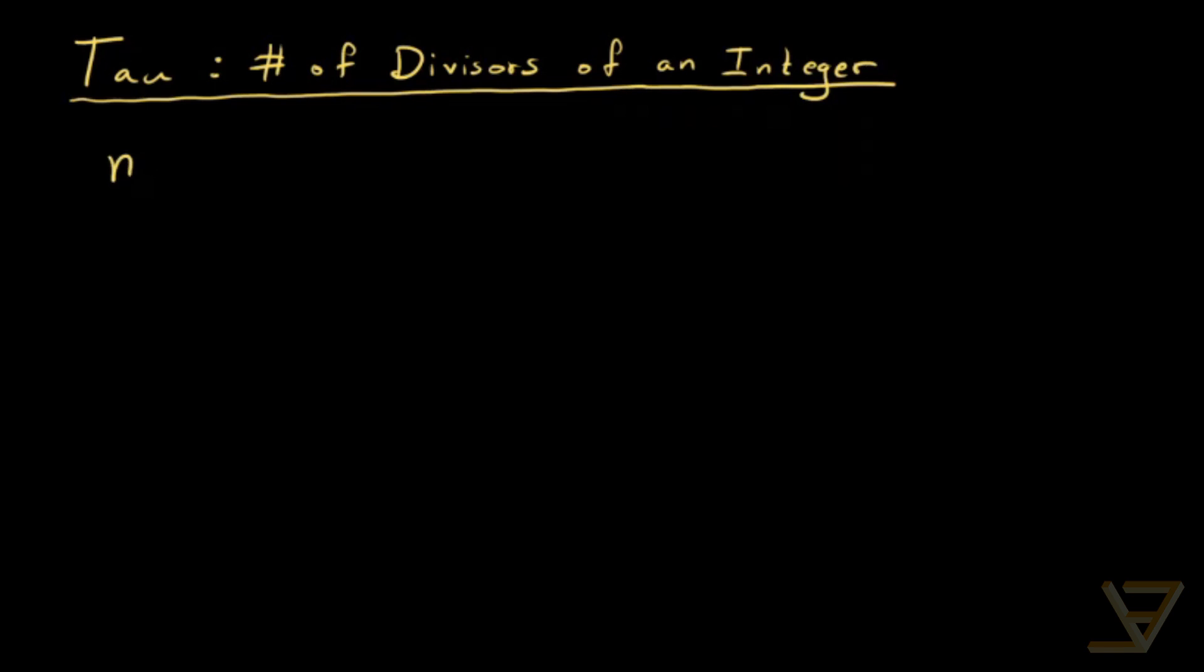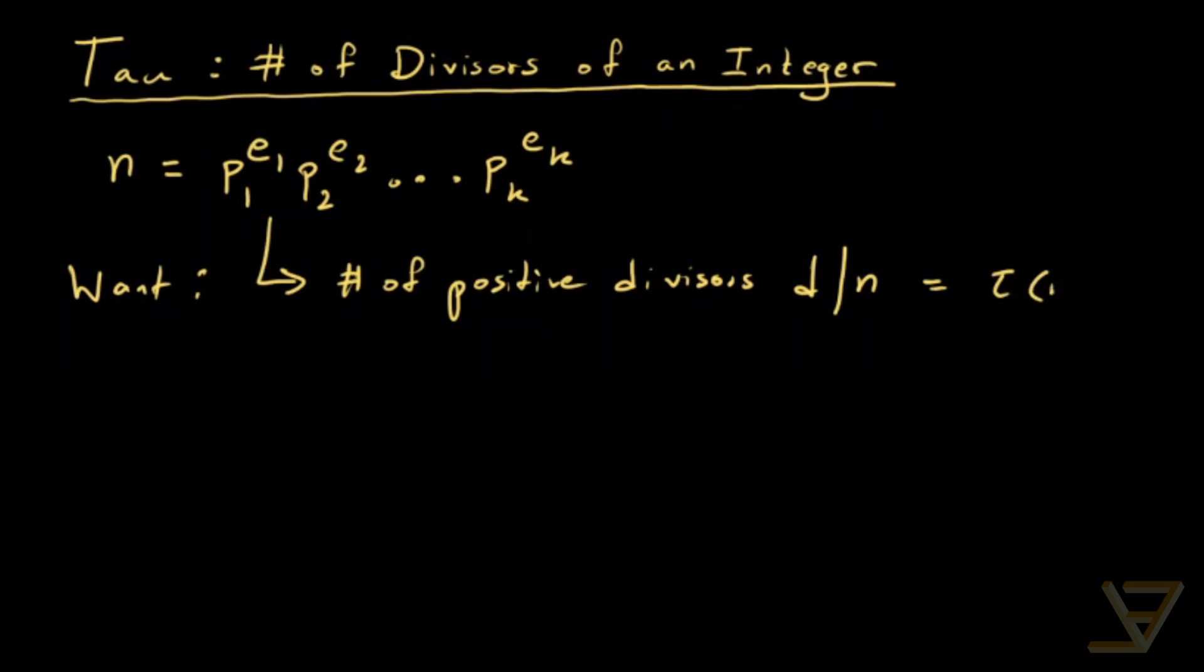Let's say n is a positive integer, and its prime factorization is p1 to the e1 times p2 to the e2, all the way through to pk to the ek. What we want is a way of determining, using the prime factorization, the number of positive divisors d that divide n. And we call that the tau function, tau of n.